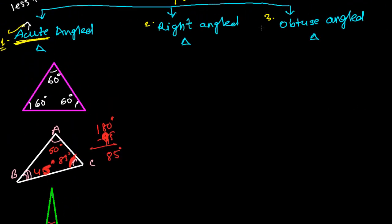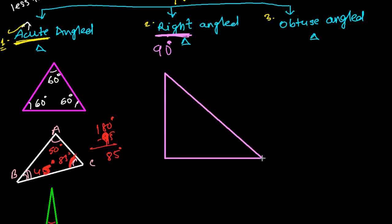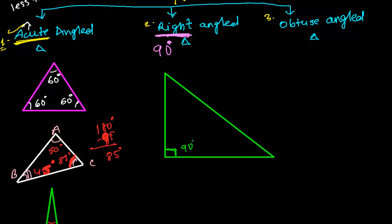The second type is the right angle triangle. From the name itself you can tell — right angle means 90 degrees. Such a triangle in which you get a 90 degree angle is called a right angle triangle. Here, exactly at this corner, this is 90 degrees. Since there is a 90 degree angle, I will say this is a right angled triangle. We need to learn a lot about the right angle triangle later.